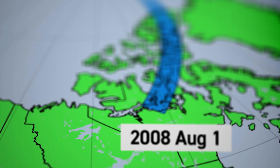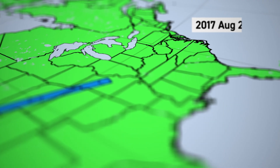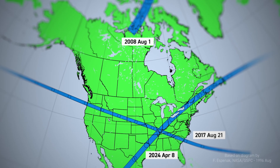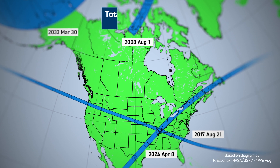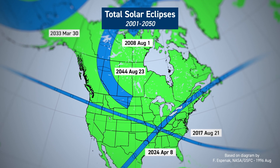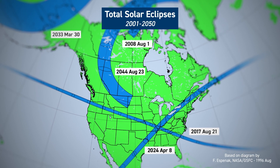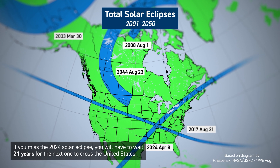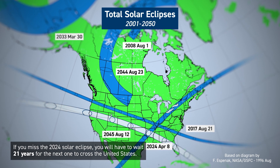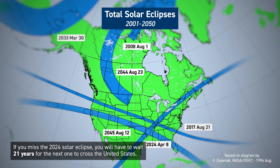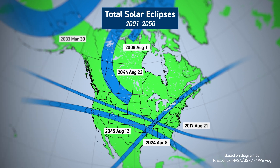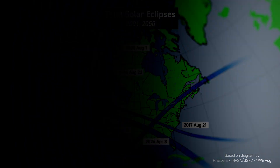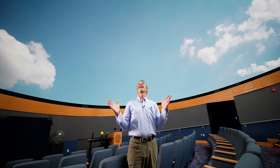The eclipse path crossing over the United States does not occur very frequently. This diagram shows the path of all total solar eclipses that will cross North America from 2001 to 2050. So if you missed this one, you will have to wait until August 12, 2045 to catch the next one crossing the United States. Thank you for watching, and here's hoping for clear skies!